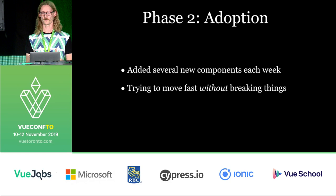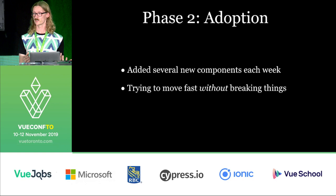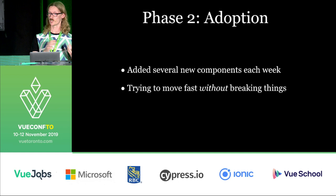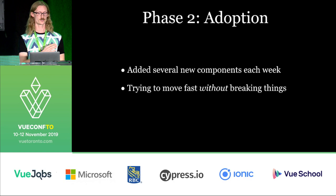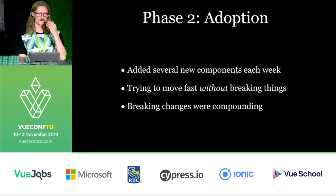Because as we were building new components, we wanted to make sure the way we built those components was done properly — because once a component is in your application and it's been used a hundred or two hundred times, it's really hard to go back and change what you did. A mistake early on has this huge ripple effect. As well, breaking changes were actually compounding on each other.